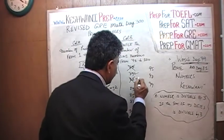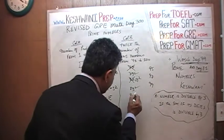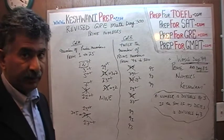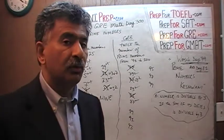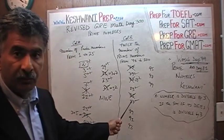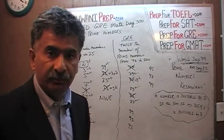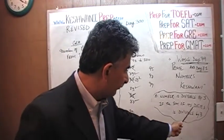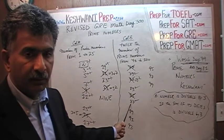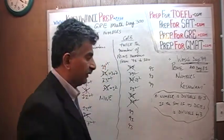81 is not a prime number — it is a perfect square, 9 squared. 83 is a prime number. 85 is not a prime number. What about 87? To check: can we divide 87 by 2? No, it is not even. Can we divide 87 by 3? A number is divisible by 3 if the sum of its digits is divisible by 3. The sum of the digits of 87 is 8 plus 7, which is 15. Since 15 is divisible by 3, 87 is divisible by 3 — it is not a prime number.